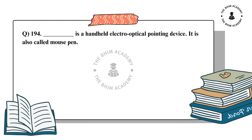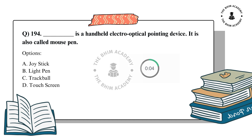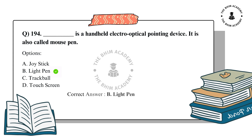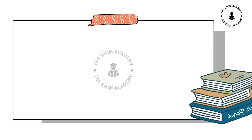Question number 194. Dash is a handheld electro-optical pointing device. It is also called Mouse Pen. The options are: A. Joystick, B. Light Pen, C. Trackball, D. Touchscreen. The correct answer is B. Light Pen.